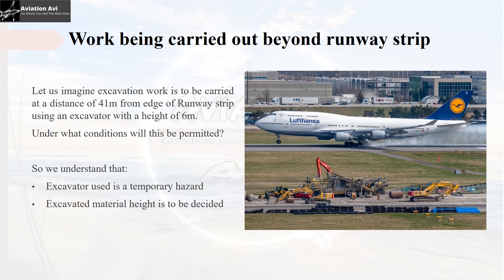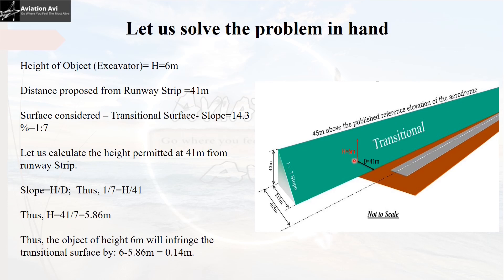Now let us consider the situation where work is being carried out beyond the runway strip. Imagine excavation work is to be carried out at a distance of 41 meters from the runway strip edge using an excavator of height 6 meters. The excavator is a temporary hazard, and the excavated material stored near the hole also needs its height decided. We are digging a drain at 41 meters using an excavator which extends to a maximum height of 6 meters. So, under what conditions will this work be permitted? This obstacle falls in the transitional surface.